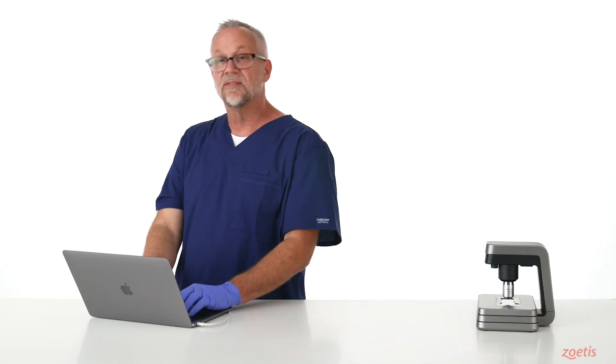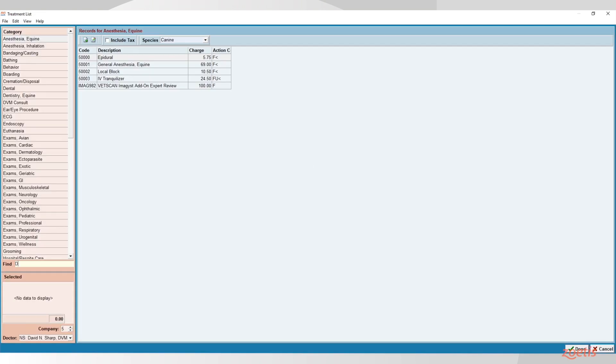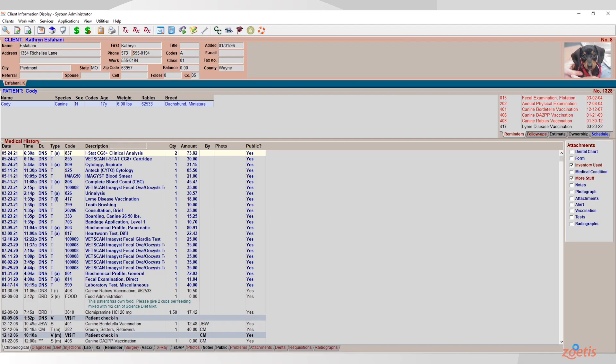Next, we're going to move over to our practice information management software and locate the animal's chart and medical record for who we are going to run the test. In this case, we're going to enter the treatment code for cytology for a test for Cody, a dog with a patient ID of 1328.